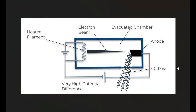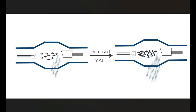Now let's talk about mAs. mAs is mA times time, and that's going to be directly proportional to the number of electrons that come off of the filament and are accelerated across the gap. If we have our x-ray tube with electrons moving across towards our anode, we produce a certain number of x-rays with a certain number of electrons. If we increase the mAs, we increase the number of electrons — not how penetrating or how energetic they are, remember that's KV — but we increase the actual number of electrons, which increases the number of x-rays.